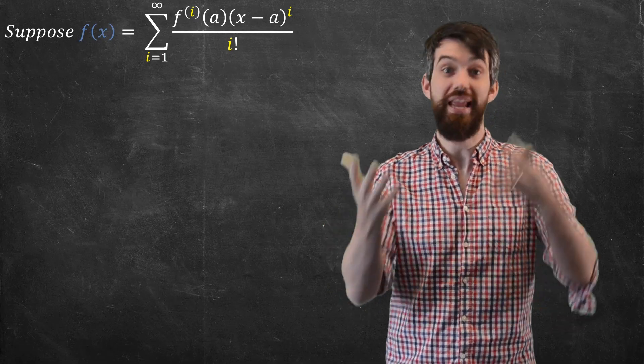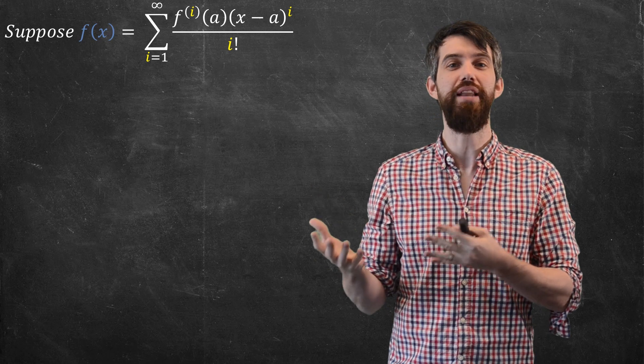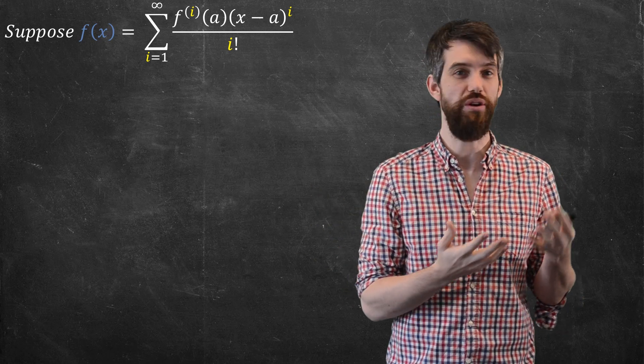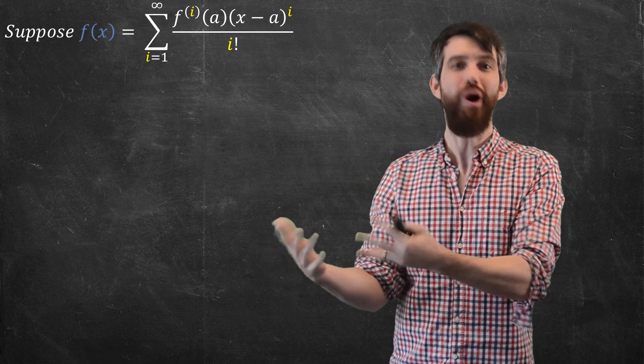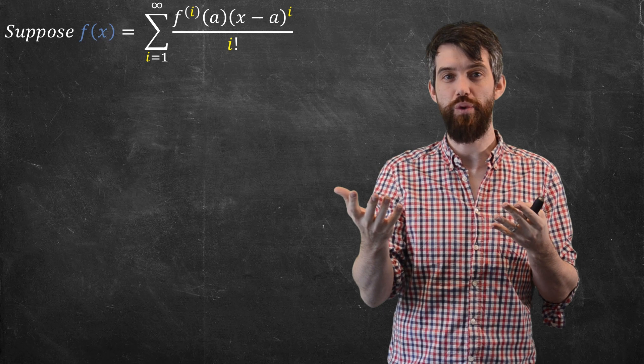If I have a power series, or a Taylor series in specific, the power series is only as good as its remainders are small. If you want to approximate something with the first n terms of a series, how bad is the remainder?